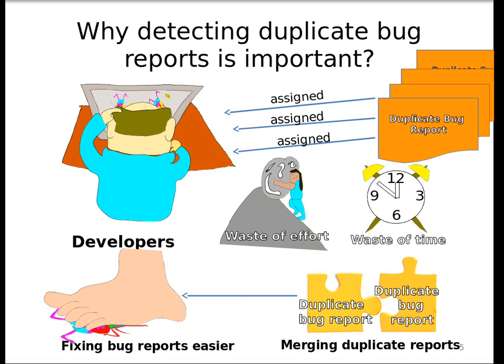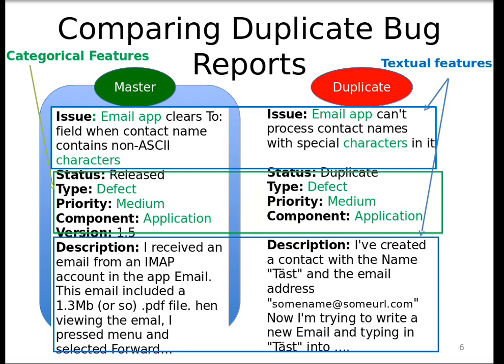Why is detecting a duplicate bug report important? Duplicate bug reports have to be triaged and analyzed — every time you read a bug report you're using up time. If bug reports say the same thing, rereading them wastes time and effort. Furthermore, if you don't know one is closed and another is open, you might try to address the same problem twice. We really want triagers to merge duplicate reports to make fixing bugs easier for developers.